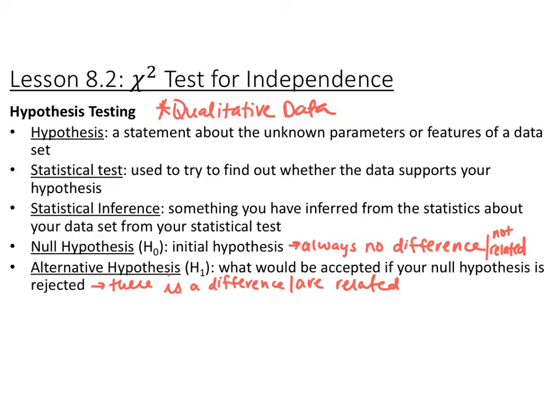The first definition is hypothesis — a statement about unknown parameters, which you discuss a lot in science. More specifically, a hypothesis is what you're trying to prove, and the way you prove it is through a statistical test. The information you get out of that is your statistical inference — what can you infer about your statistics based on the test you performed.